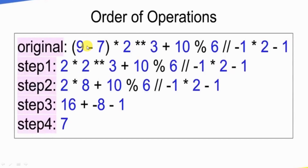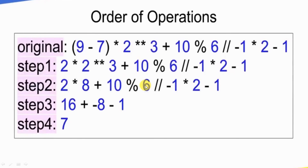First, evaluate 9 minus 7 inside parentheses, giving 2. Next preference is exponentiation: 2 power 3, which is 8. Next preference is modulo, floor division, multiplication, and division. In this case, 2 into 8 multiplication is 16. Then 10 modulo 6 is 4.